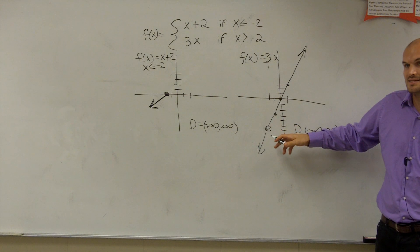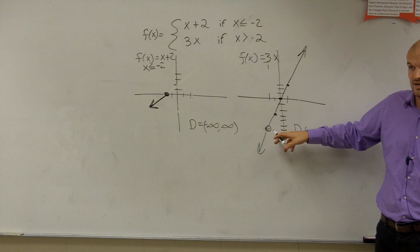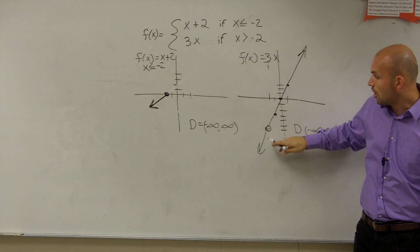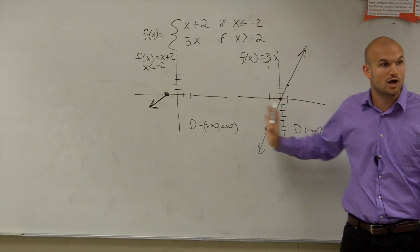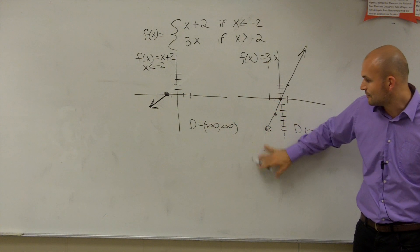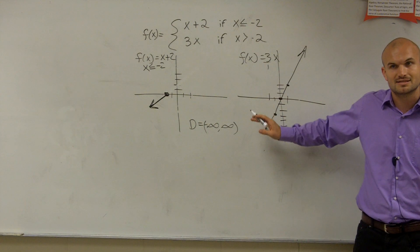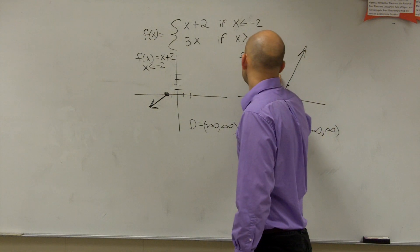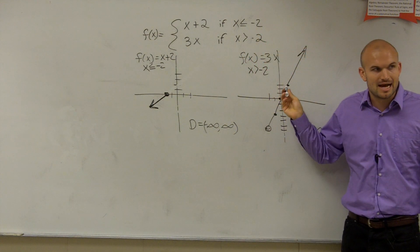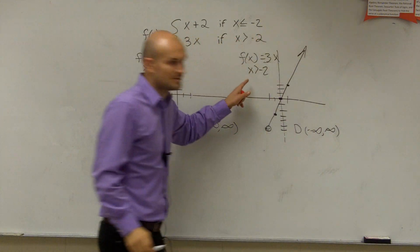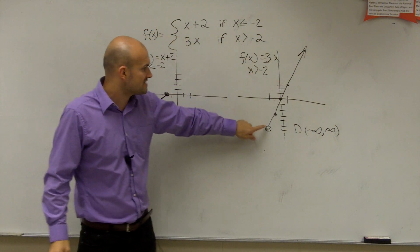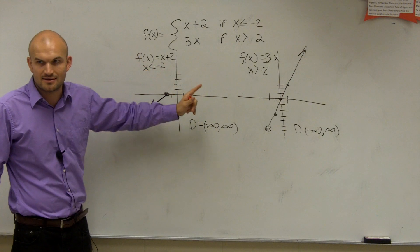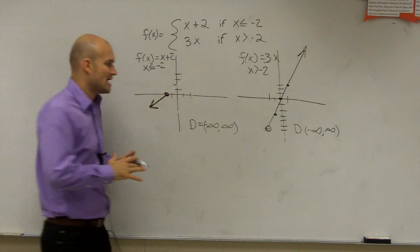When my x is going to be greater than negative 2, it's going to be open right here. It says greater than, not greater than or equal to, so that's why it's an open dot. All x values less than negative 2 — everything to the left — gets erased. The domain for this piece is x greater than negative 2, and the domain for the other piece is x less than or equal to negative 2. Now we just put those two graphs together.